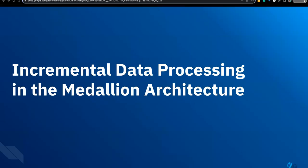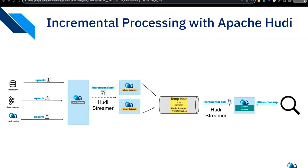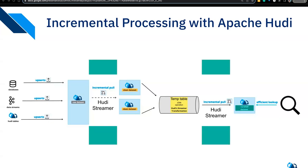Within the medallion architecture, a standout feature that spares you from full table scans is Hudi's incremental framework. Using this framework, only changes are streamed to update downstream tables. To realize end-to-end incremental processing, Hudi provides a Hudi Streamer to efficiently pull changes from the source, support mutable data and record-level updates, and write data to downstream sinks — all the way from source to bronze, silver, and gold tables.